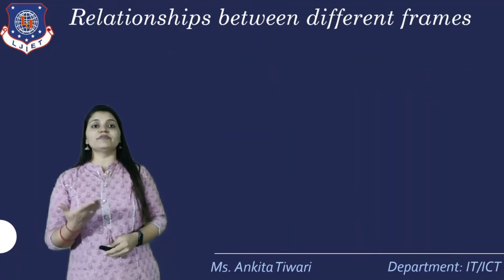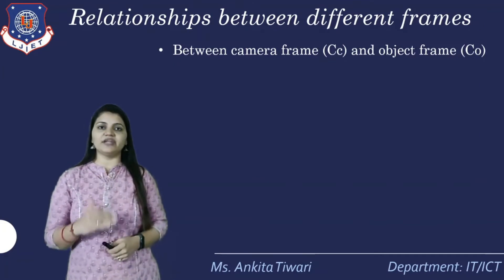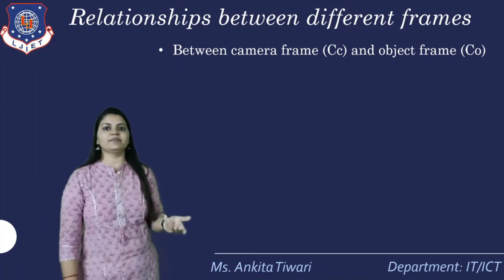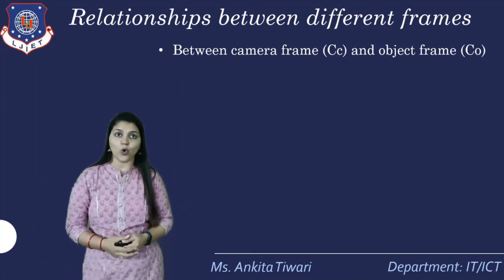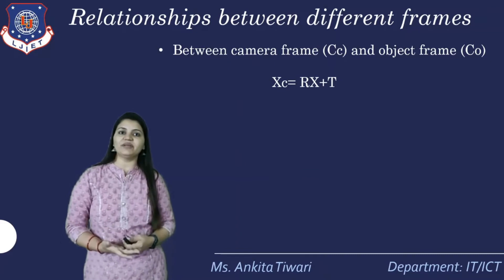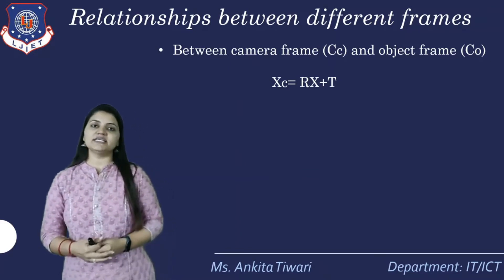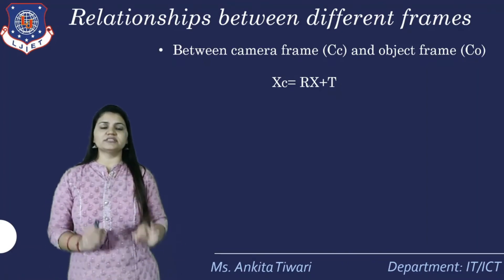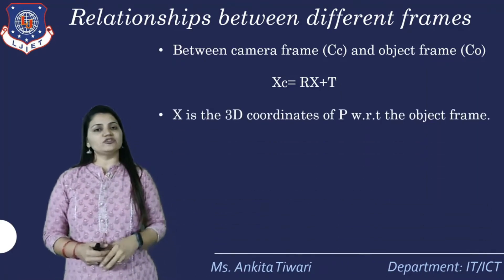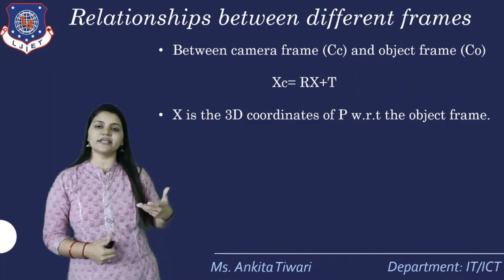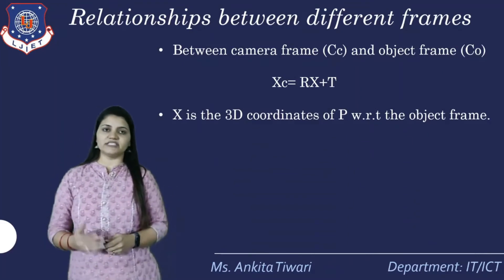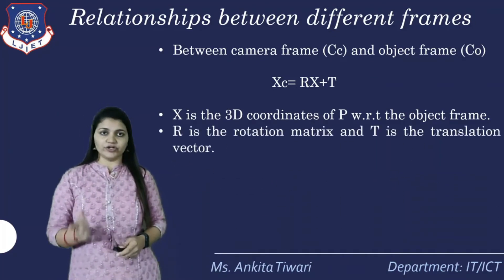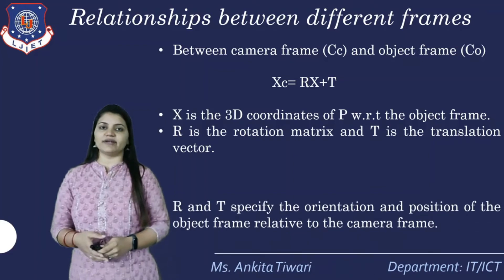We need to understand the relationship between different frames. Between the camera frame CC and the object frame CO, we have Xc = RX + T, where X is the 3D coordinates of P with respect to the object frame, R is the rotation matrix, and T is the translation matrix. R and T specify the orientation and position of the object frame relative to the camera frame, and they are collectively called the pose of the object.